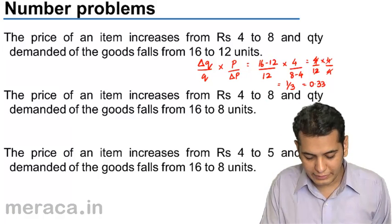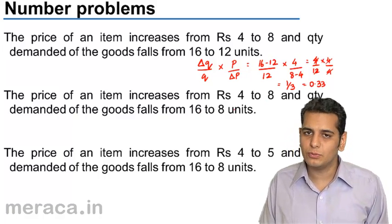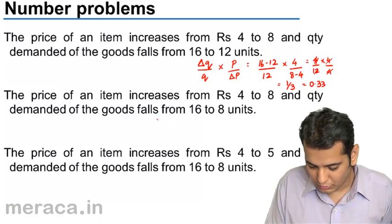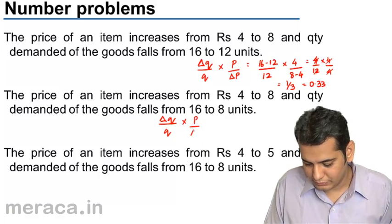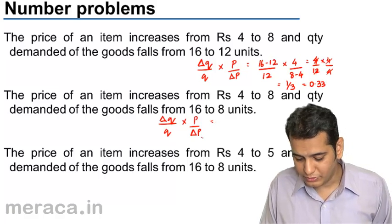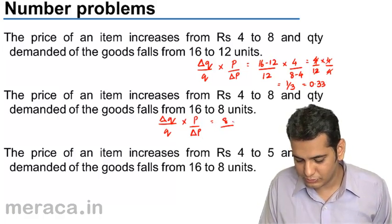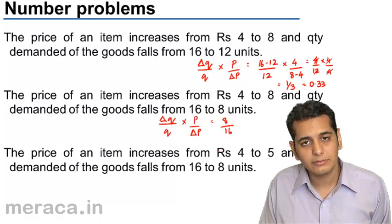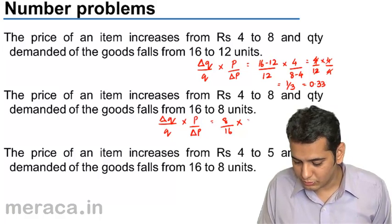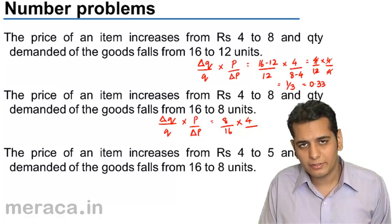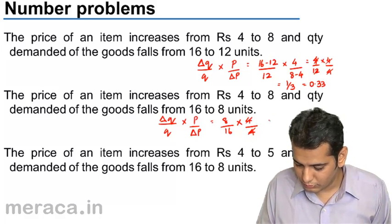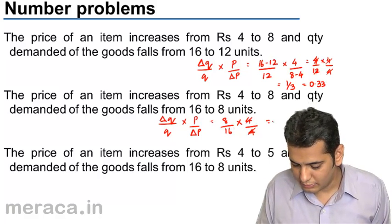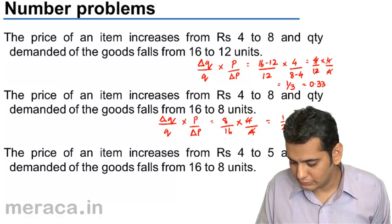The second example: the price of an item increases from rupees 4 to rupees 8, and the quantity demanded falls from 16 units to 8 units. Applying the same formula — change in quantity upon original quantity, multiplied by original price upon change in price — the change in quantity is 16 minus 8 = 8 units, original quantity is 16, original price is 4, and change in price is 8 minus 4 = 4. Solving this gives elasticity of demand as 1/2 or 0.5.